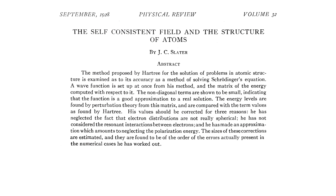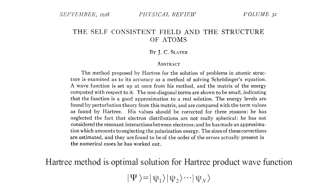Hartree had developed his method using intuitive concepts. Slater provided a theoretical foundation for the Hartree method. Indeed, if one starts with the assumption that the n-electron wave function is a Hartree product of n one-electron wave functions, then Hartree's method can be shown to be optimal. At the same time, Slater pointed out that the Hartree product wave function does not have the anti-symmetry required by the exclusion principle. What was needed was a way to extend the ideas behind Hartree's method to a wave function represented by a Slater determinant.